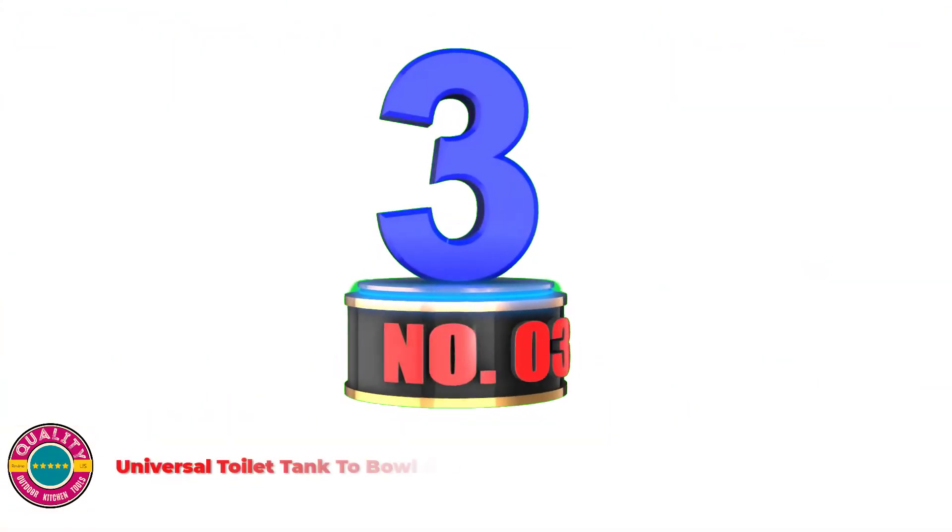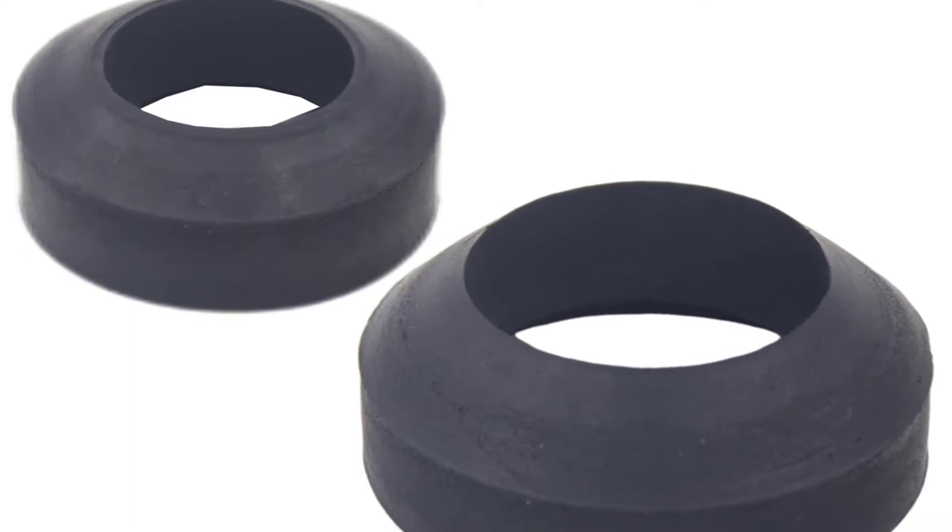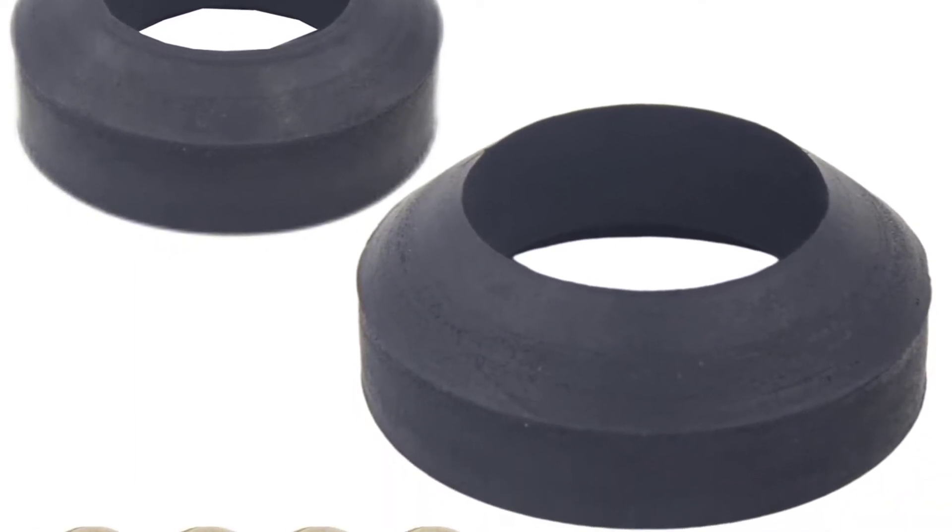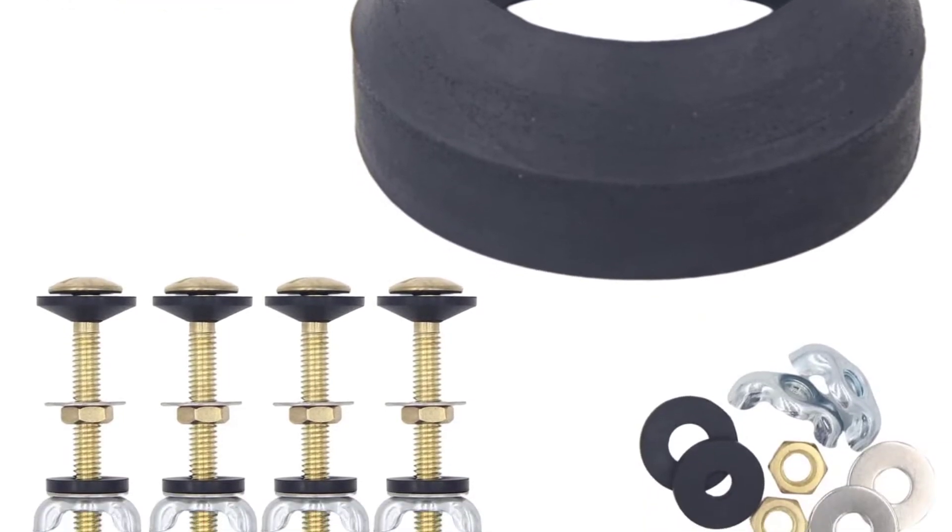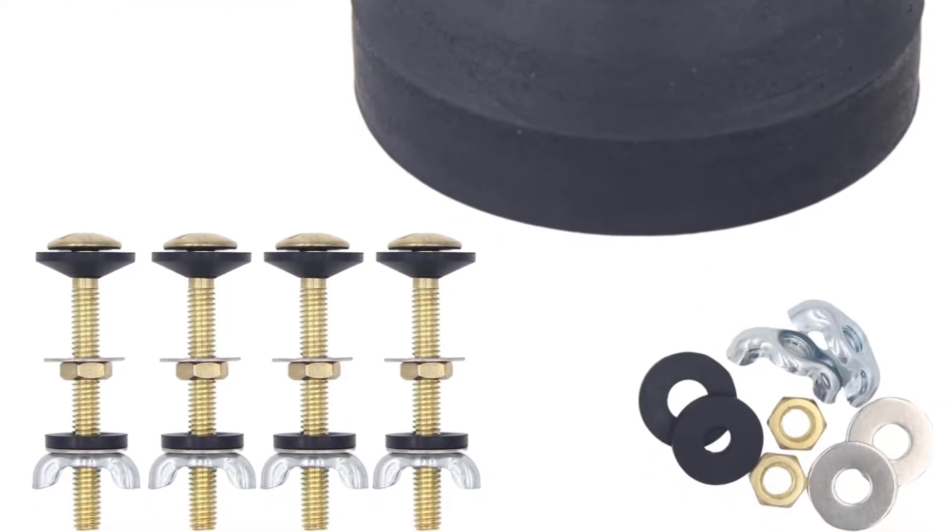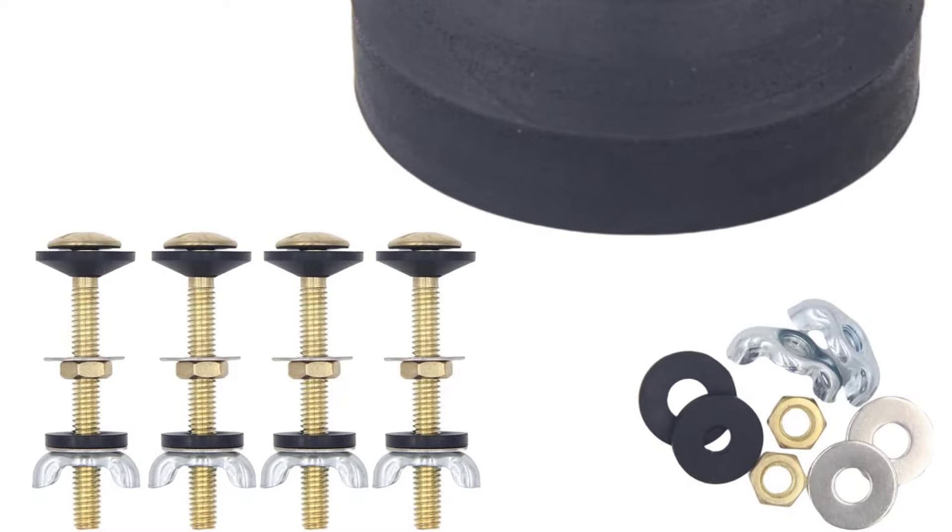Number 3. Universal Toilet Tank-to-Bowl Gasket Repair Kit. Universal Tank-to-Bowl Gasket Replacements with Tank-to-Bowl Bolts. In addition to four sets of toilet tank-to-bowl bolts and two sizes of gaskets for fit flush valve opening, spare washers and nuts are added for replacement when corresponding fittings are lost or damaged.